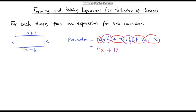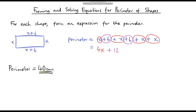Now, what if I tell you that the perimeter of this rectangle, after measuring it, is 40 centimetres? Given that it's 40 centimetres, we can now calculate this missing letter — we can calculate what the value of x is, given that we know the perimeter. What we're going to do is set up an equation that involves the perimeter and solve it.